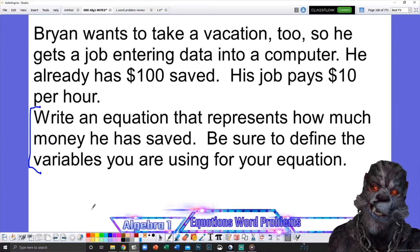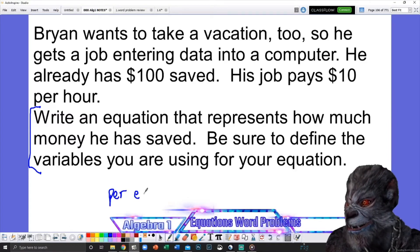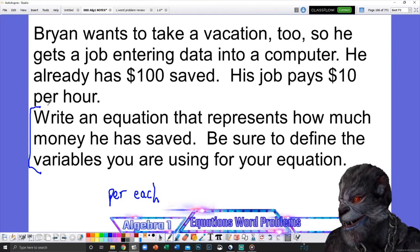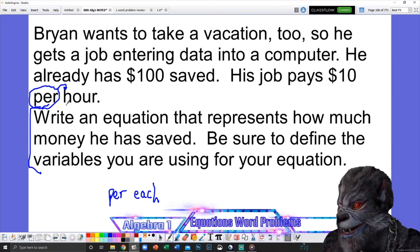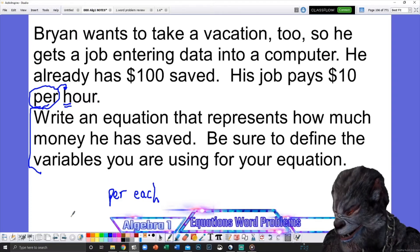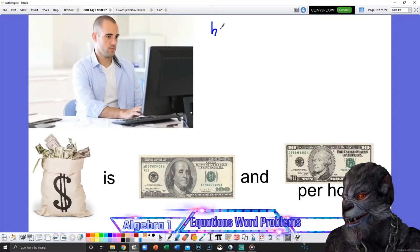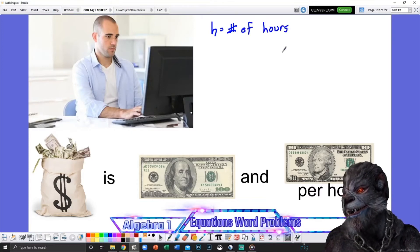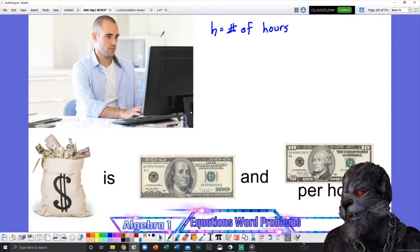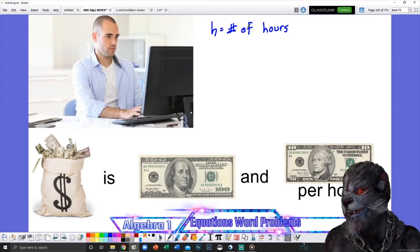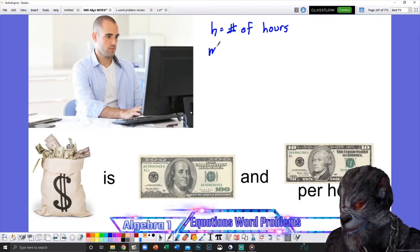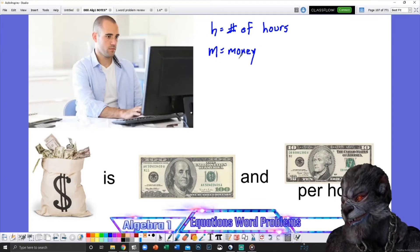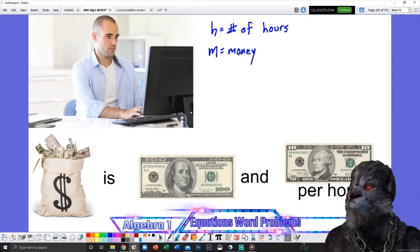Brian wants to take a vacation. Heck, all of us want to take a vacation, but Brian wants to take vacation too, so he gets a job entering data into a computer. He already has $100 saved. His job pays him $10 per hour. Write an equation and then define the variables. So this part is going to be the same every time. It's going to tell you to write an equation, define the variables. Always the same. All right, so let's do it. First, we're looking for the words per or each. Remember these two words are your friends. So can you see either of those words in here somewhere? Well, hopefully you saw per is right there. Per what? Per hour.